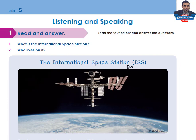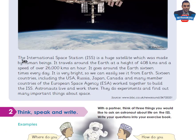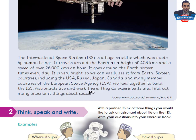The International Space Station, ISS. The International Space Station ISS is a huge satellite which was made by human beings. It travels around the Earth at a height of 408 kilometers and a speed of over 26,000 kilometers an hour. It goes around the Earth 16 times every day. It is very bright, so we can easily see it from Earth. 16 countries including the USA, Russia, Japan, Canada, and many member countries of the European Space Agency work together to build the ISS. Astronauts live and work there. They do experiments and find out many important things about space.